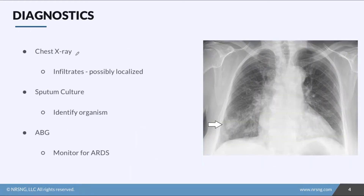There are a couple of ways we can diagnose pneumonia. The first is a chest x-ray. On the chest x-ray, we're going to see infiltrates. You can see here on this patient, these infiltrates are just in the right lower lobe.